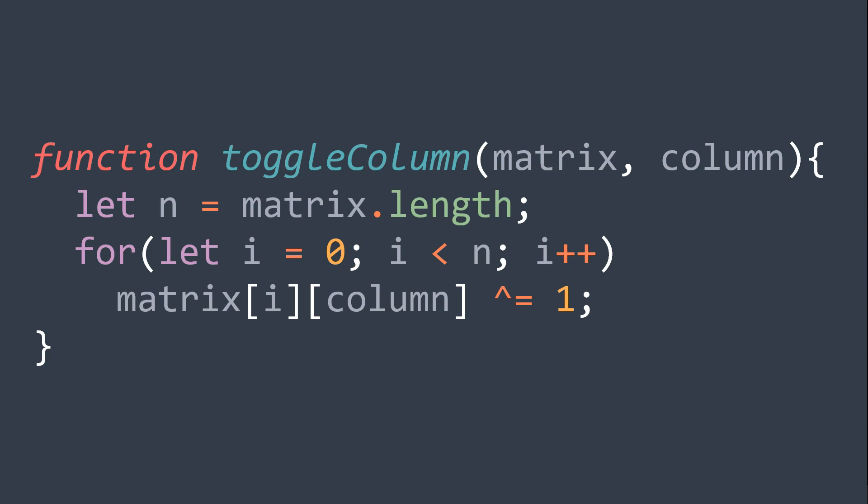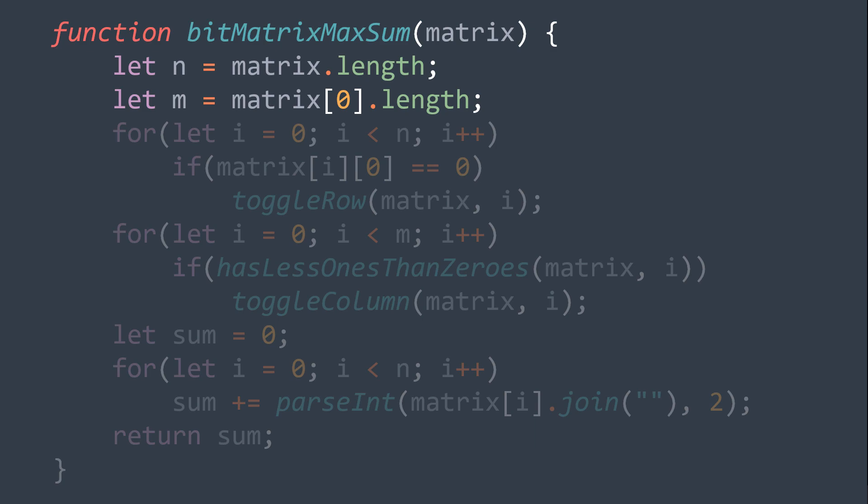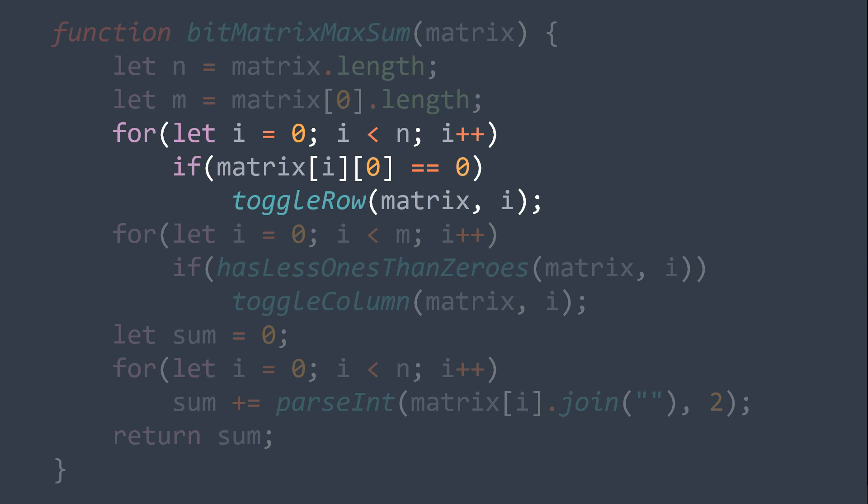Now that we got our additional functions, we can make the one that will give us the greatest sum, n represents the number of rows and m the number of columns. First step, toggle the rows. For each row at the index i, if the element at the index 0, the first element, is equal to 0, we toggle the row, by using the function we made.